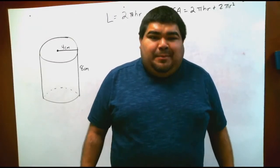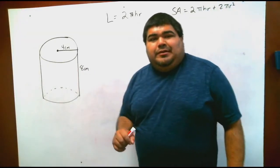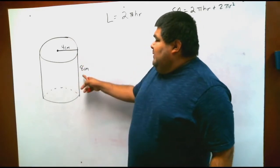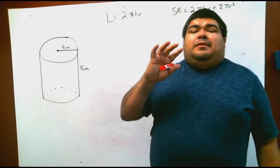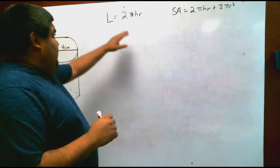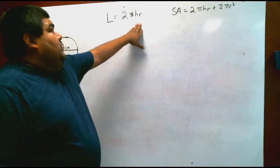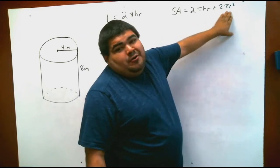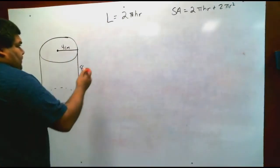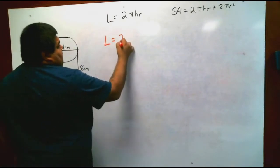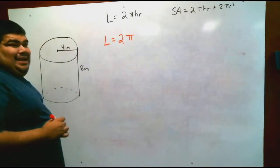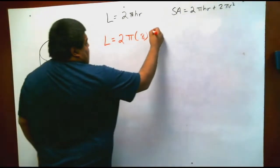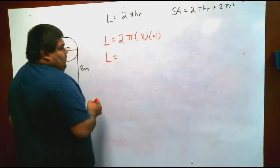Alright, we're going to do one more example to really understand the concept. This time I've given you a radius directly: the radius is 4 and the height is 8 centimeters. We're going to use the same equations — lateral area equals 2 pi r h, and surface area equals the lateral part plus 2 pi r squared.